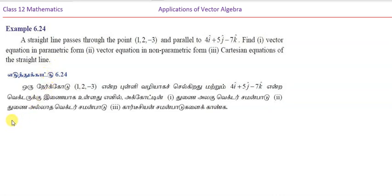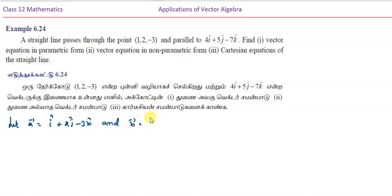For the first part, we identify the position vector and direction vector. Let vector a = i + 2j - 3k, and vector b = 4i + 5j - 7k.